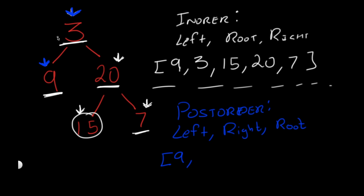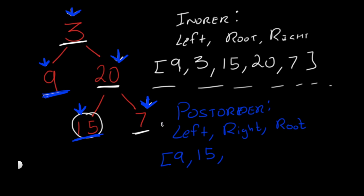We go back to 3 but don't add it yet because we need to look at its right child, which is 20. At 20, we look at its left child, which is 15. At 15, we look for a left child — doesn't exist — and no right child either, so we add 15. We go back to 20 but need its right child first, which is 7. At 7, left child doesn't exist, right child doesn't exist, so we add 7. Now we can add 20, and finally we add the root 3. This is our post-order traversal.